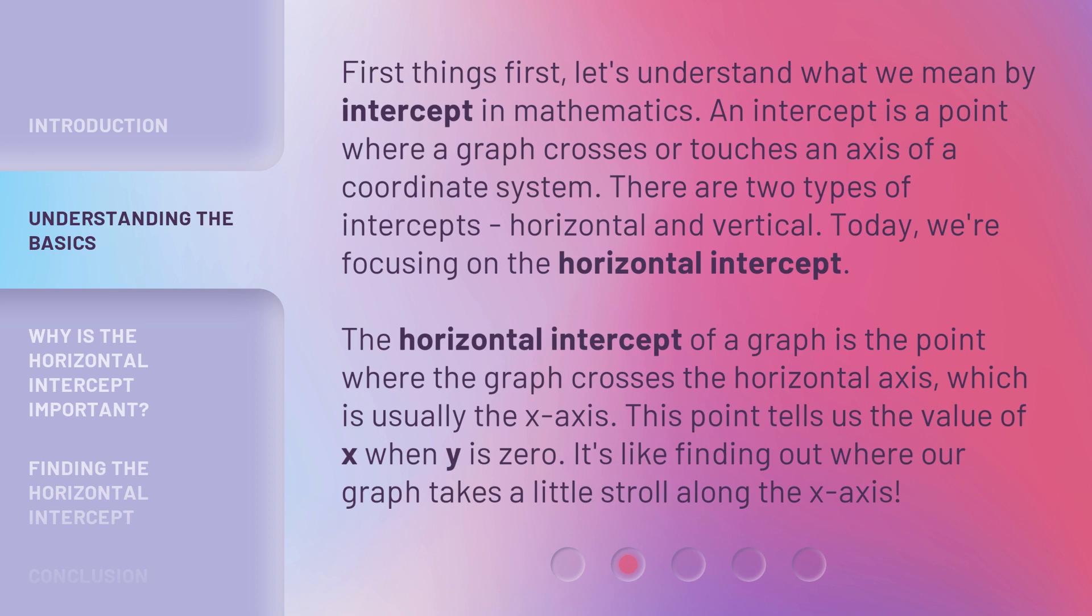The horizontal intercept of a graph is the point where the graph crosses the horizontal axis, which is usually the x-axis. This point tells us the value of x when y is zero. It's like finding out where our graph takes a little stroll along the x-axis.